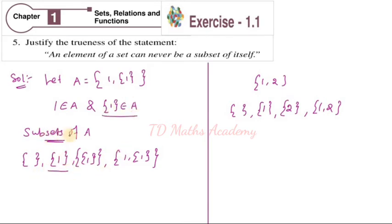I am writing the subsets of A. Null set is one subset. 1 is one subset. Set {1} is one subset. Here also, set {1} is one element. Therefore, I am saying: an element of a set can also be a subset.